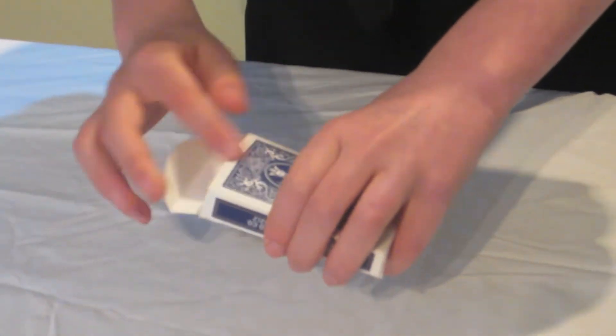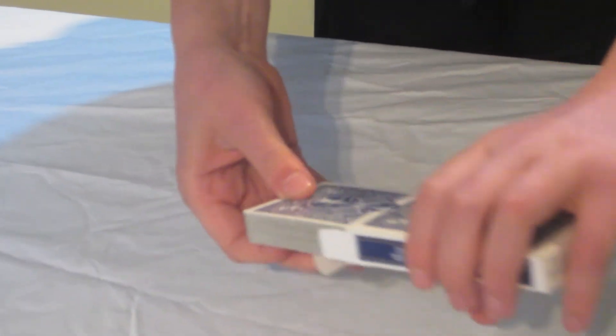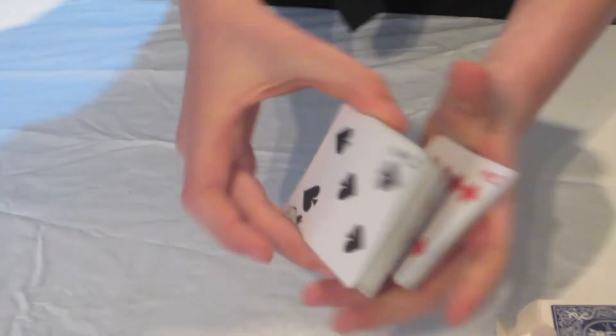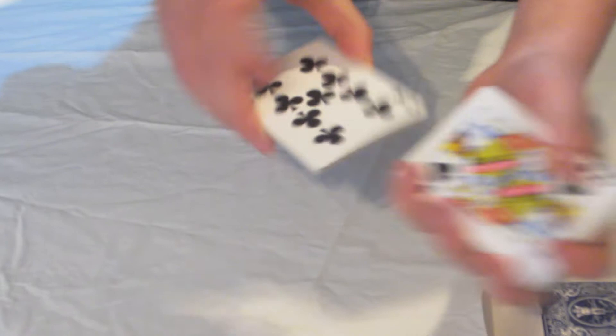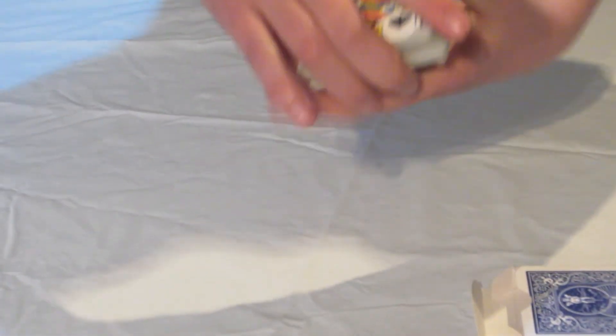And so I've just got here a normal pack of Bicycle playing cards. I'm just going to take the cards out of the box and I'm just going to show you that all the cards are in fact different. I've got all 52 different playing cards.